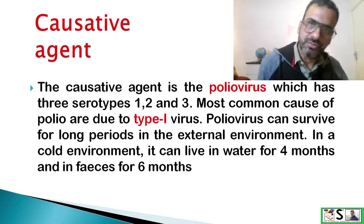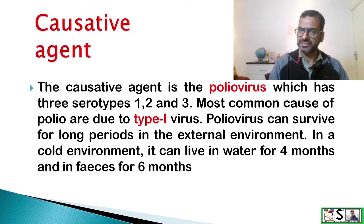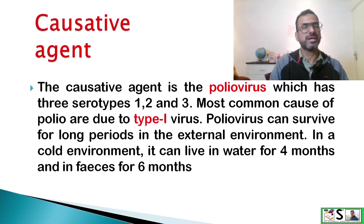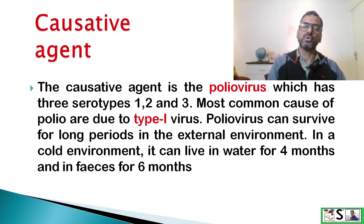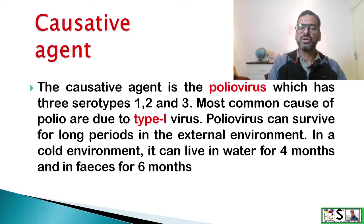What is the causative agent of poliomyelitis? The causative agent of this disease is poliovirus, which has three serotypes: type 1, type 2, and type 3. The most common cause of polio is due to type 1 virus. Poliovirus can survive for a long period in the external environment. In a cold environment, it can live in water for four months and in human feces up to six months.